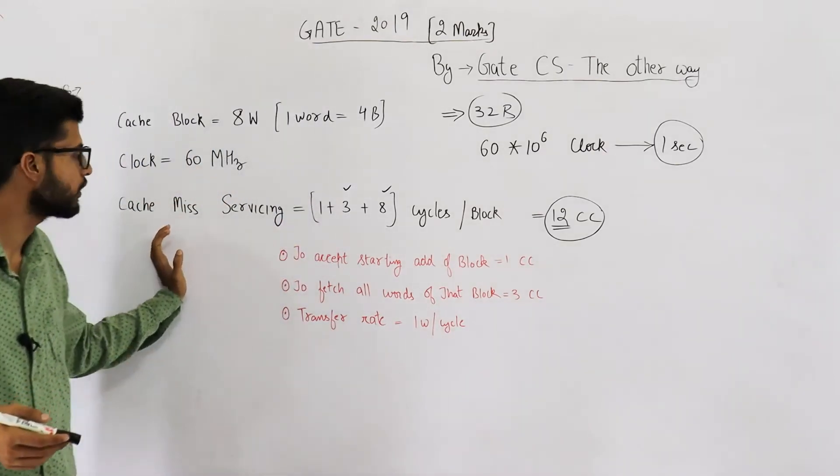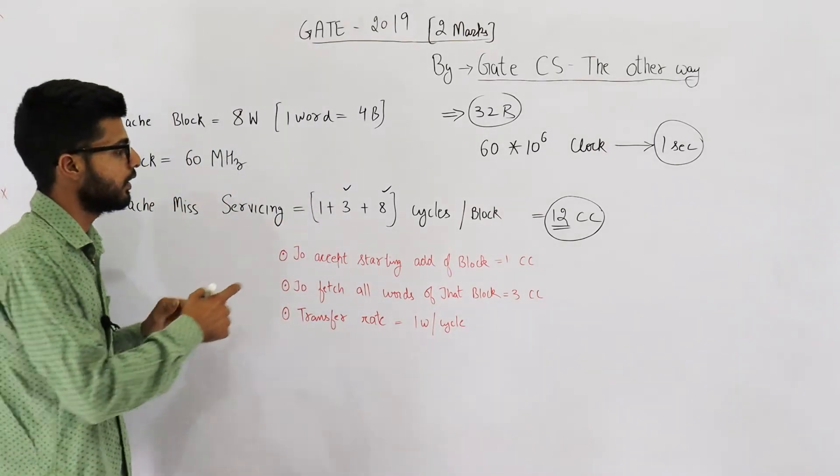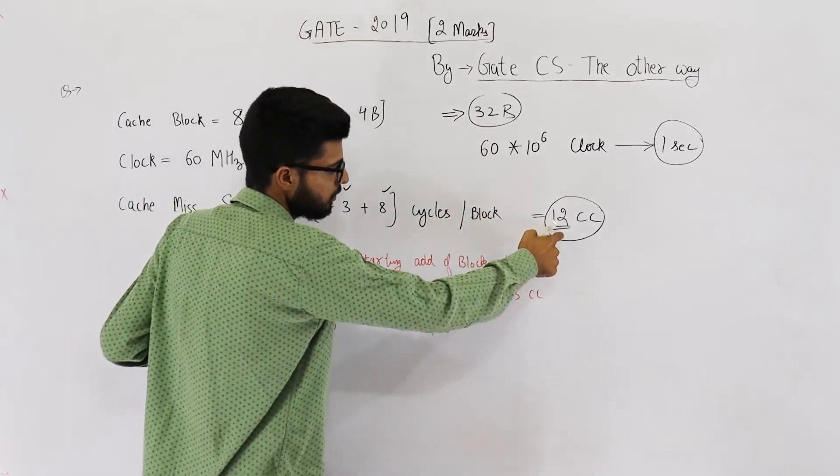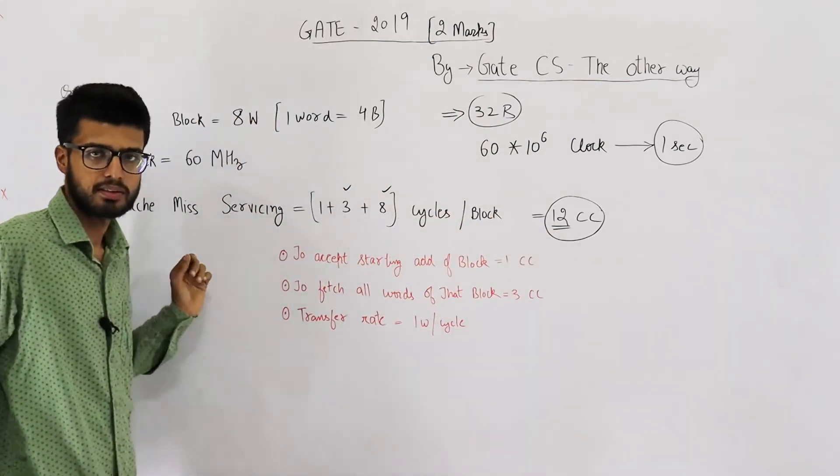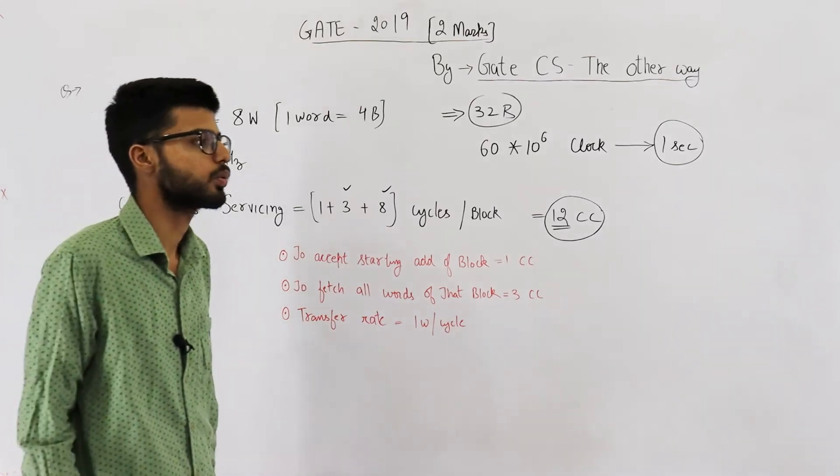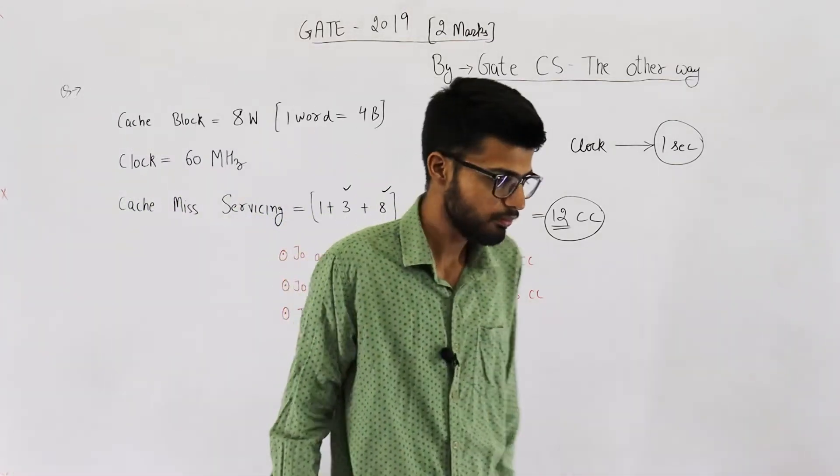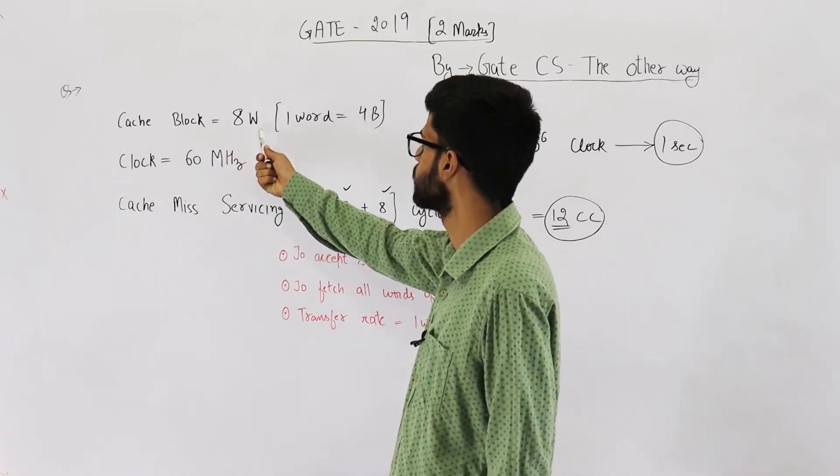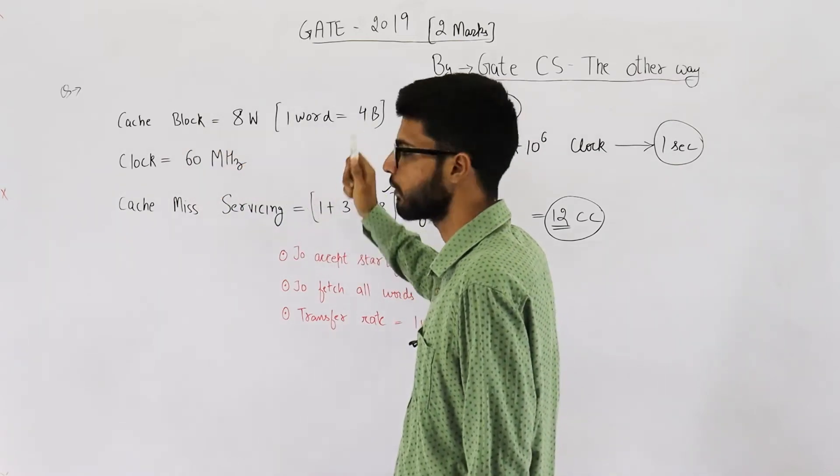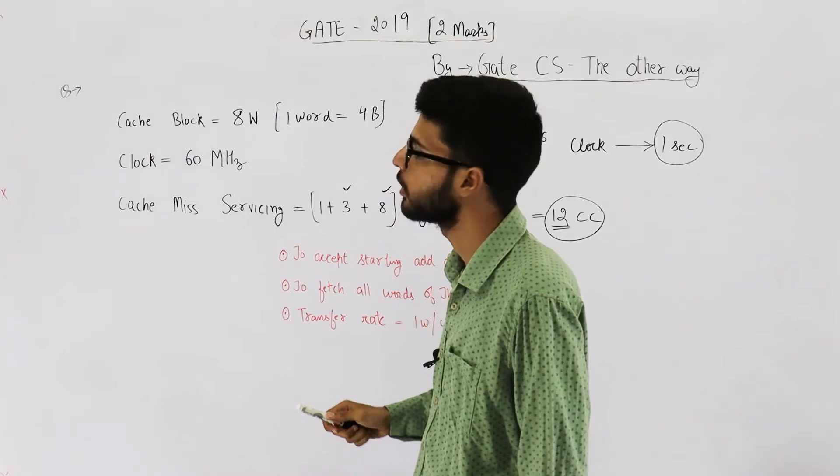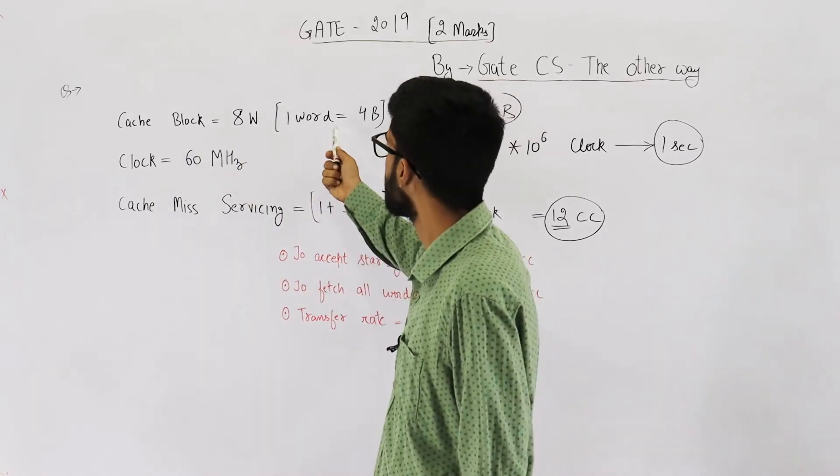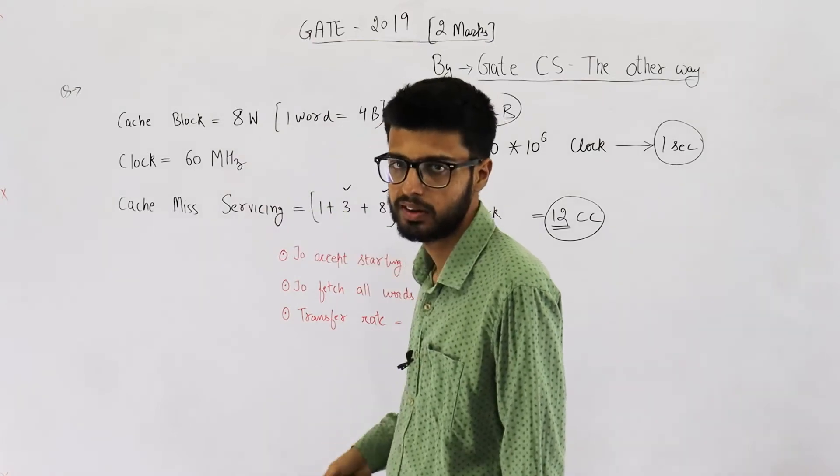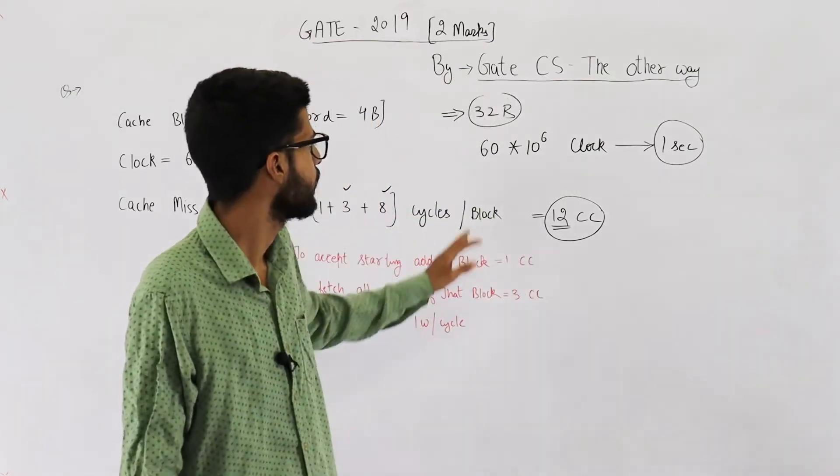So, in case of a cache miss, eight plus three plus one. That means, 12 clock cycles are required. Servicing a cache miss requires 12 clock cycles. Also, they have given cache block is eight words. A word is four bytes. So, in total, cache block will be how many bytes. It is eight into four, 32. 32 bytes. I have noted down it here.